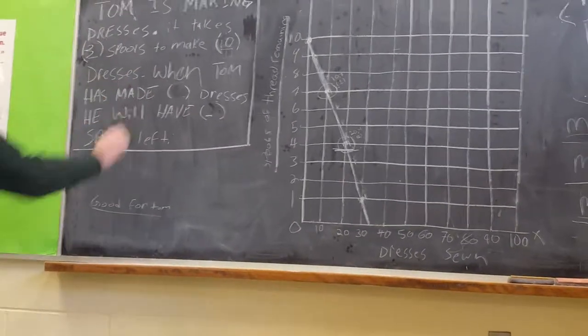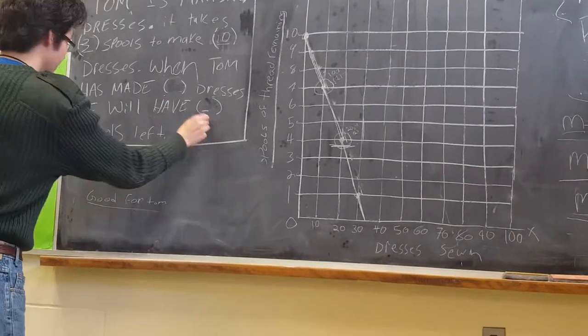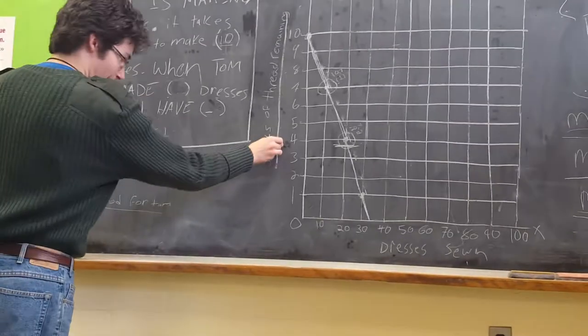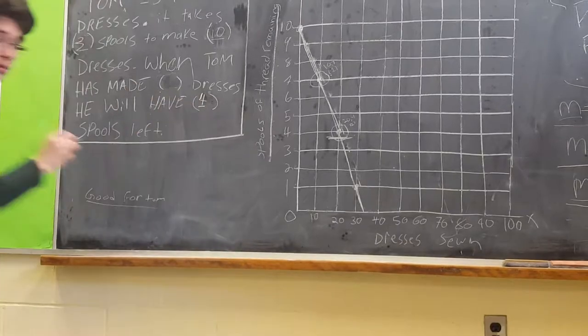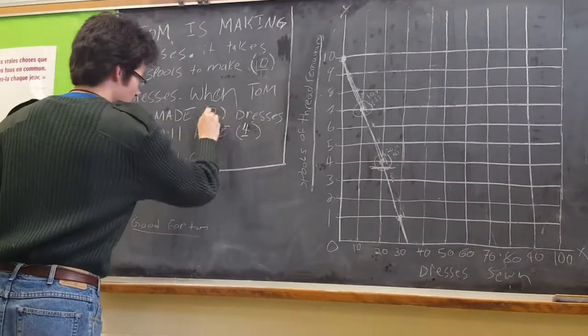So what you can write, when Tom has made blank dresses, he will have blank spools left. We should already know by now that spools is the y-axis. So this will be 4 spools left. And this is the x-axis, which will give us 20.